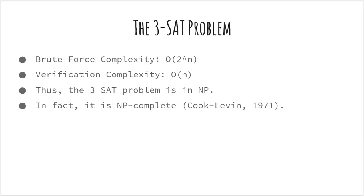So we have the 3SAT problem. One way of solving it is to try every possible combination of truth assignments for the N variables — there are 2 to the power N such possibilities. If we tried this approach, we would be running in big O of 2 to the power N. But if somebody gave us the solution, it is very easy to verify whether it satisfies the Boolean formula. These are the two conditions for NP: even if the problem itself is not efficiently solvable, if someone generated a solution, you should have a certificate that runs in polynomial time to verify whether the solution is valid. Thus the 3SAT problem is in NP — in fact it is NP-complete. It was one of the first known NP-complete problems and was independently solved by Cook and Levin in 1971 and 1973. This problem is often used as a starting point to show that other problems are NP-complete.